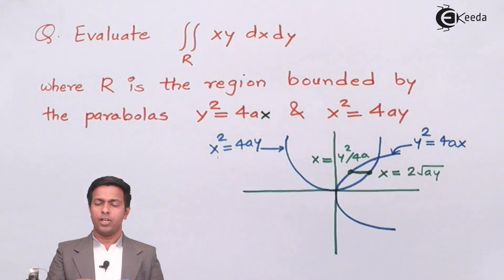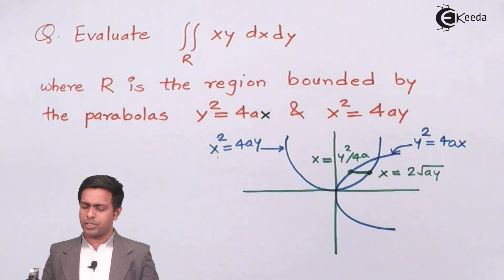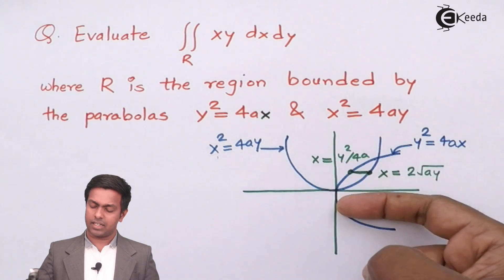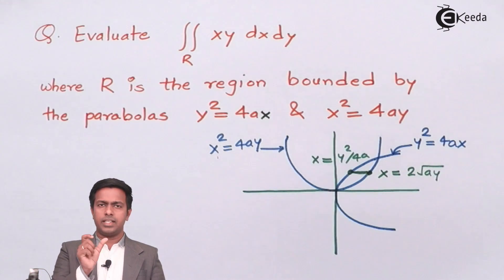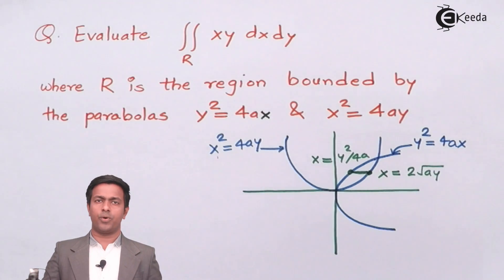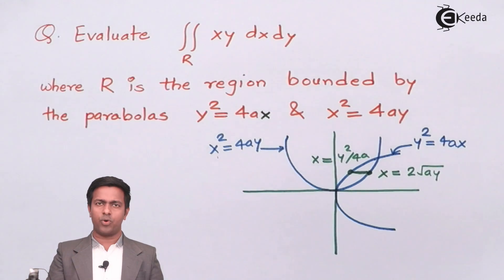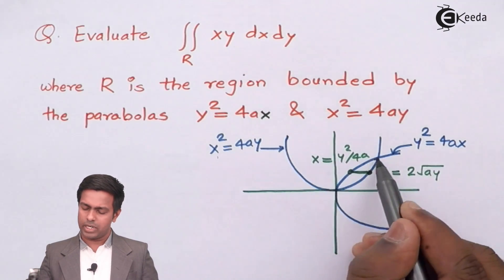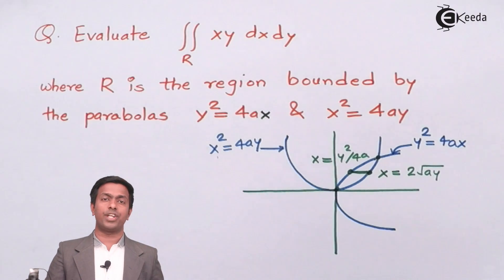This strip moves vertically (it is a flexible strip), covering the entire region. As the strip moves upward and downward, we observe the endpoints of the region — the strip goes from the lower intersection point up to the upper intersection point.